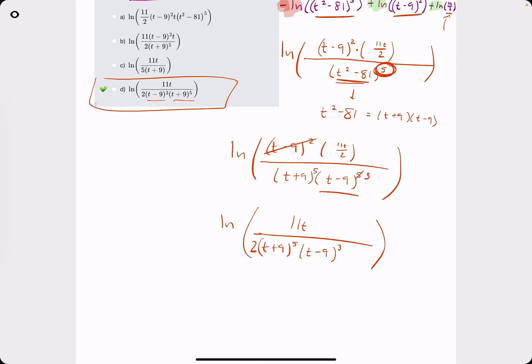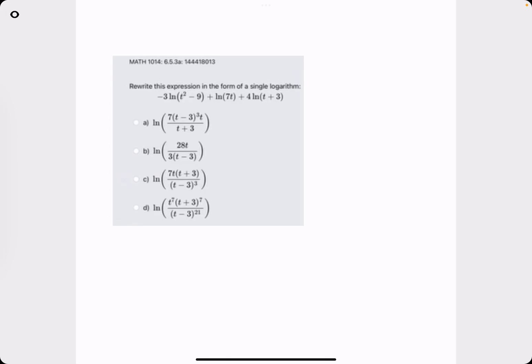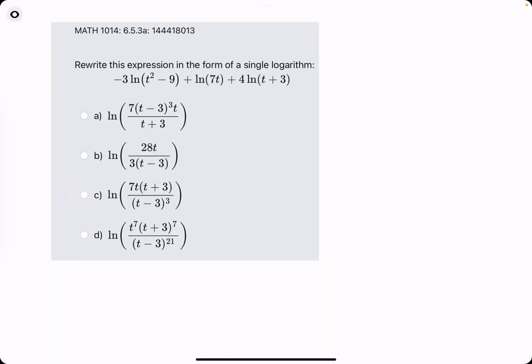Alright, that was example number 1. Let's do one more example and let's speed up the process a little bit and show you how fast we can knock these out. So first step, we're bringing up the coefficients as exponents and we're leaving out the negative when necessary.